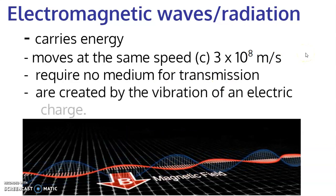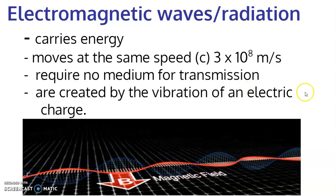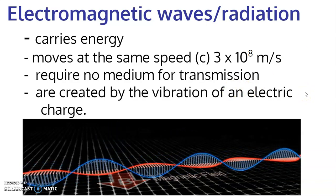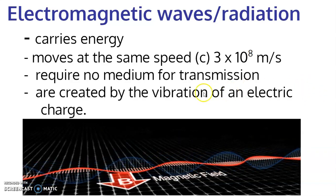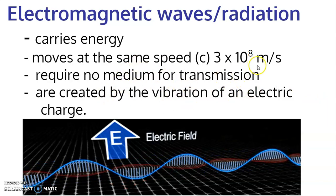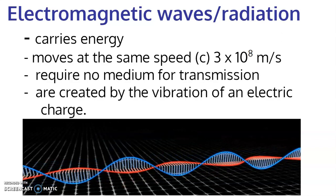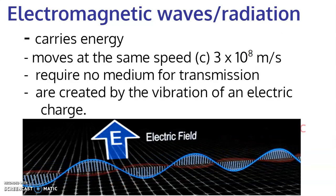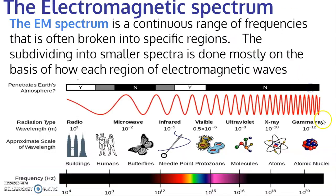Electromagnetic waves are all created by the vibration of electric charge. If you vibrate an electric charge, you create an electromagnetic wave — that's how radio signals are produced. Any electromagnetic radiation really all starts from the vibration of an electric charge. Any kind of vibration will generate a wave; light is no different, you just have to vibrate the right things.